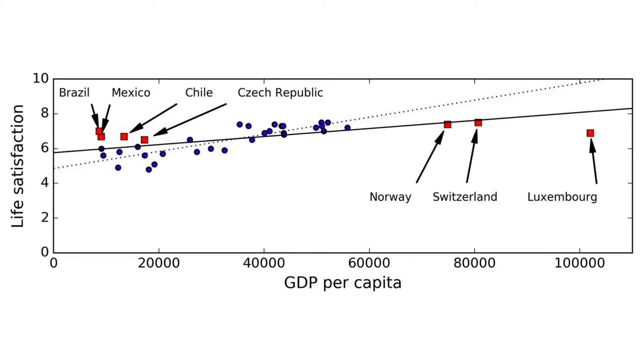Let us take one more example. Say, you have built a model that predicts the life satisfaction based on the features like GDP per capita and the country name.